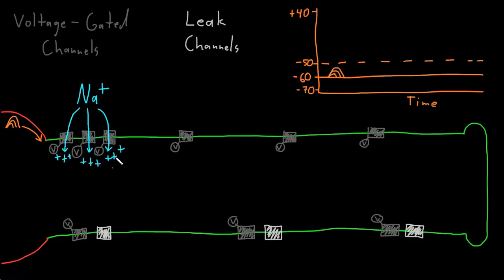So many of these voltage-gated sodium channels open that the membrane permeability to sodium is dramatically increased. This causes the membrane potential — which has already gone from the resting potential to the threshold potential from the graded potentials — to dramatically rise as all this sodium flows in through these open channels, trying to head toward the equilibrium potential of sodium, which is usually around positive 50 millivolts. This rapid increase in membrane potential is called the rising phase of the action potential.